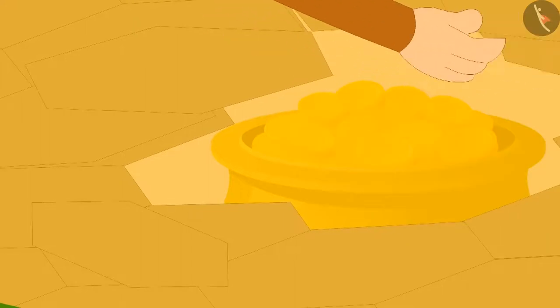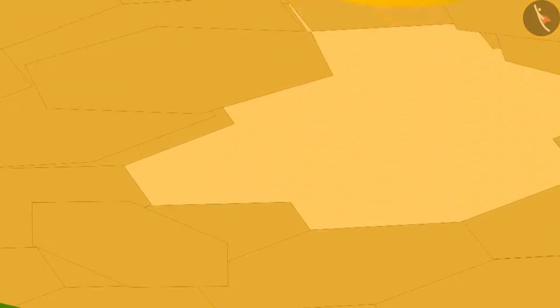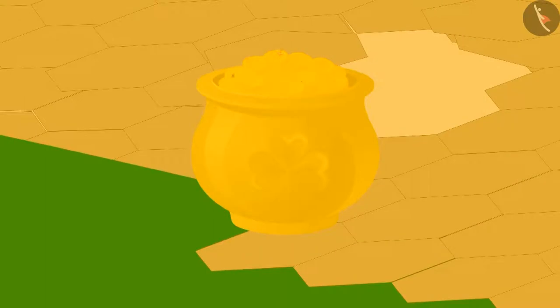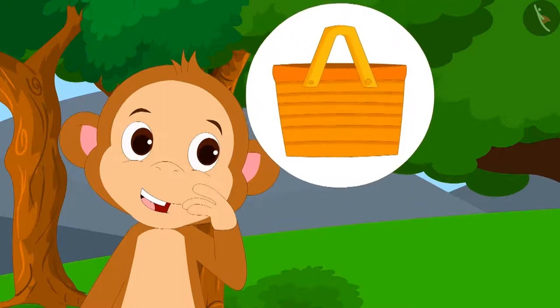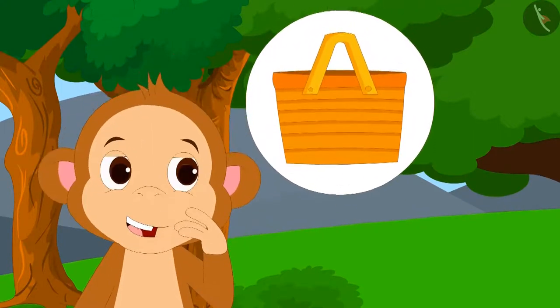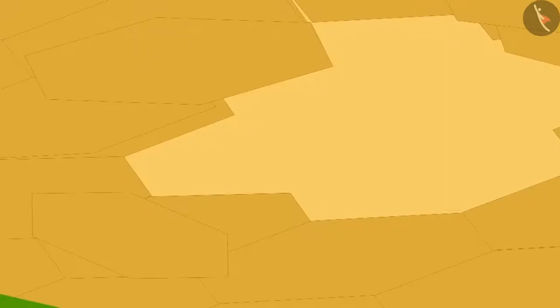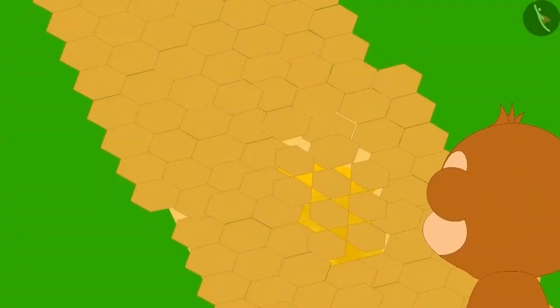Babban took out some other fixed tiles from the floor as well. Finally, he took that golden vessel out and saw lots of gold coins inside it. Babban thought he would bring a big bag the next day and take away that treasure. He hid the vessel back under the ground, but he was not able to understand how the tiles were fixed on the floor. He placed the tile and went home happily.